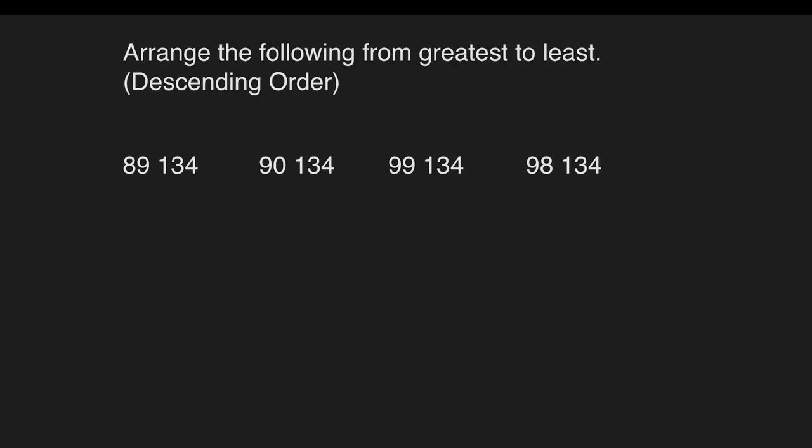Next activity. Arrange the following from greatest to least. When we say greatest to least, that is descending order. So from the greatest, which do you think among these numbers is the greatest? Let's check the digits starting from the left.